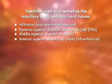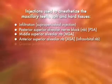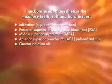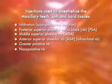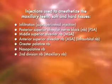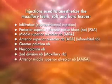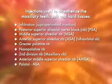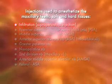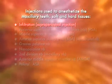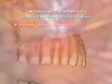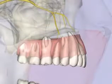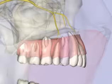Also known as the infraorbital injection, the greater palatine nerve block, nasopalatine nerve block, the second division nerve block, the anterior middle superior alveolar nerve block, and the palatal approach to the ASA. Maxillary infiltration is used to achieve pulpal anesthesia of one or two maxillary teeth. The area anesthetized is the pulp and the buccal soft tissue and bone of the tooth anesthetized.